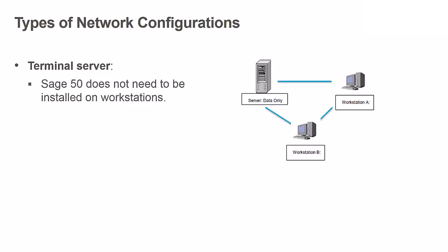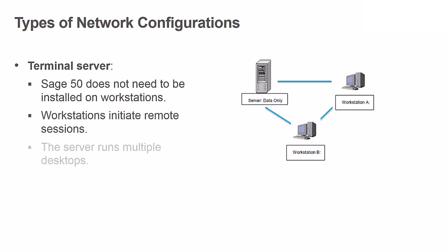In this example, each workstation — A, B, and C — can initiate a remote session, and the server will run three desktops, one for each workstation. Sage50 should be installed on the server, where the data will also be stored. We have explained the three network configurations supported by Sage50. Let's now discuss how to perform an advanced server-only installation.